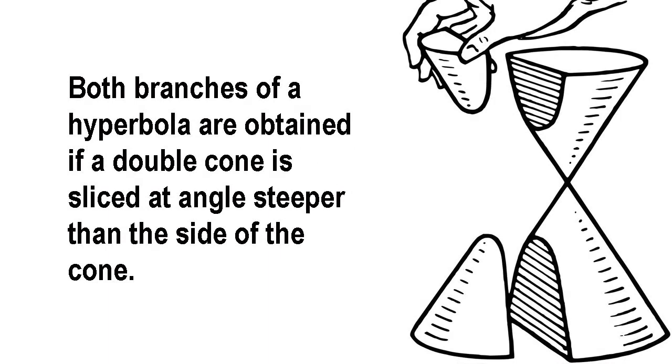The hyperbola is one of the conic section family of curves which also includes the circle, the ellipse and the parabola. It's obtained if a double cone is cut by a plane inclined to the axis of the cone in such a way that it meets both branches of the cone.